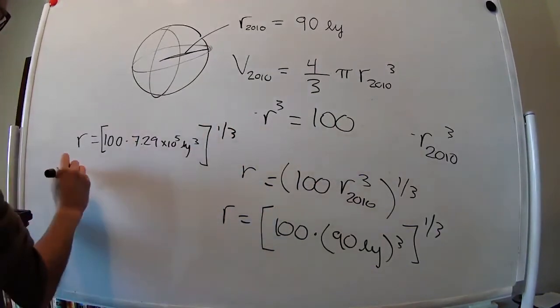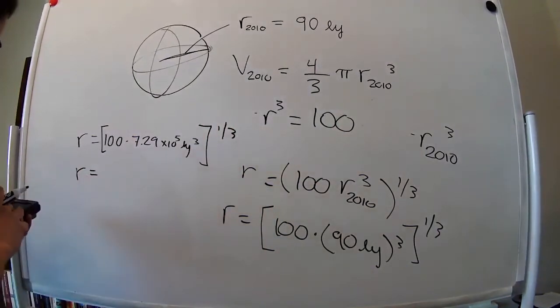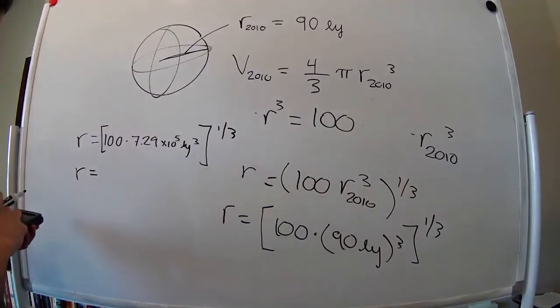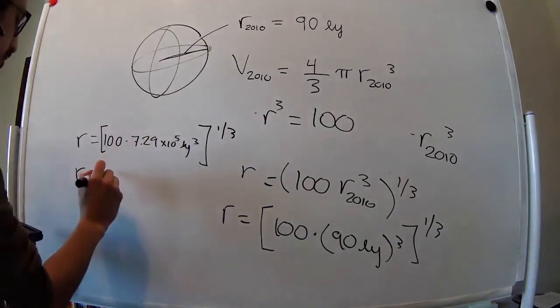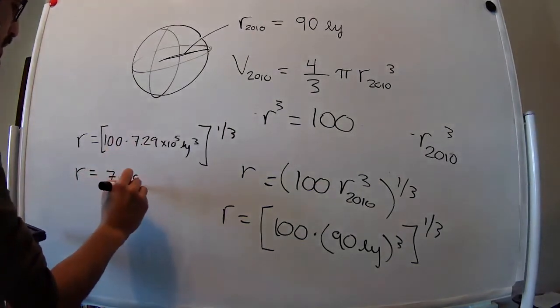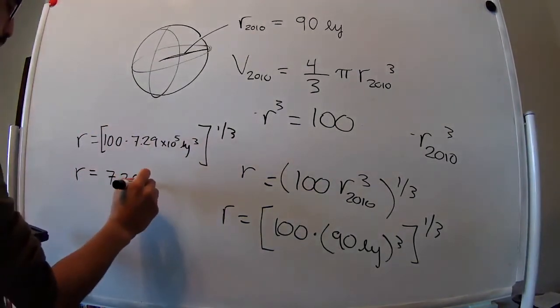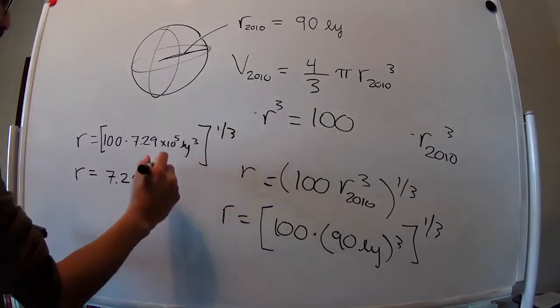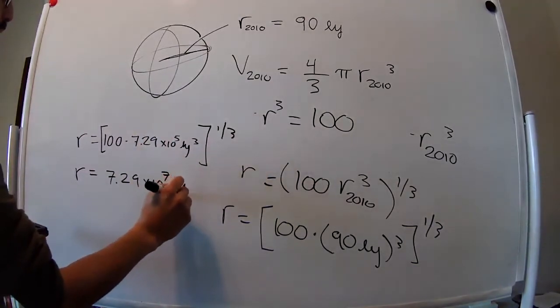Times 10⁵ light years cubed. 90 to the 1/3, so this times 100, it's 7.29, you just add the 2, it's 10⁷.